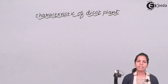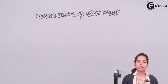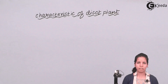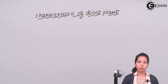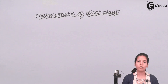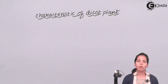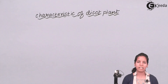Dicot plants — an example of this is moong or any other pulses. When you take that pulse and break it into two different parts, what you get is two different cotyledons. Moong dal or chana dal is an example of a dicot plant.